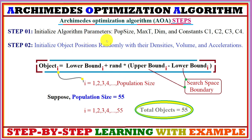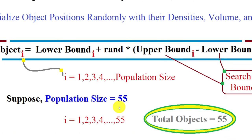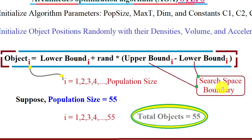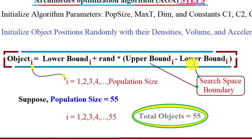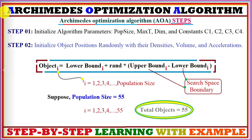In step one, we initialize all important parameters for this algorithm. Population size is the total number of search agents — for example, if population size is 55, we have 55 objects. We also set maximum iterations (how many times the loop will repeat before displaying the optimal solution), dimension (the search space dimension), lower and upper bounds (the search space boundaries), and constants for this algorithm.